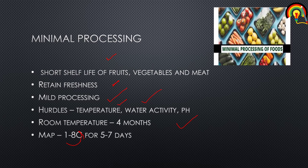Minimally processed foods undergo hurdle technology steps including steam blanching for one to three minutes. Water activity can be reduced from 0.98 to 0.93 by adding sugar. The pH is reduced using citric acid or phosphoric acid, with addition of around three to four grams. Antimicrobials such as sorbate or sulfite are also added at around 1000 parts per million.